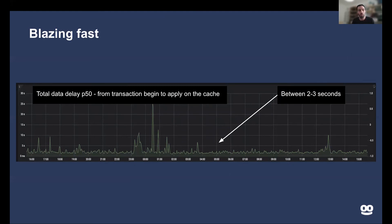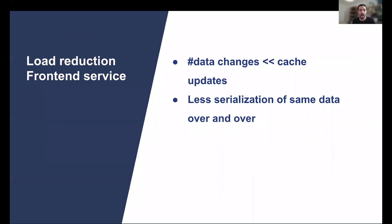To understand the load reduction: we can assume that the number of data changes is orders of magnitude smaller than the number of cache updates. If we had TTLs of seconds on all caches, that number would be in the hundreds of thousands of updates per second per machine. The number of actual data changes is a lot smaller than that, as we saw on our database graphs. That means less serialization and less parsing of the same data over and over — the same value already in the cache.